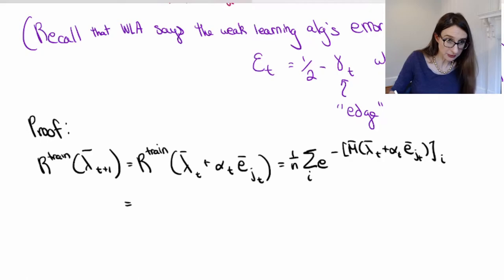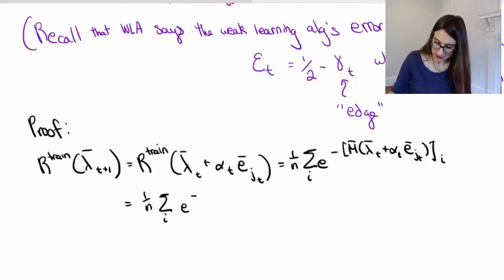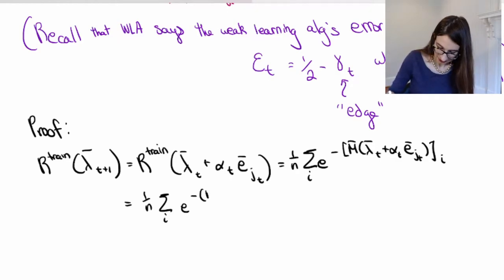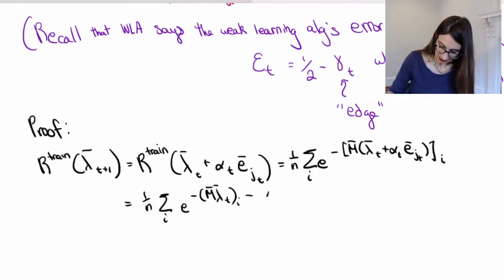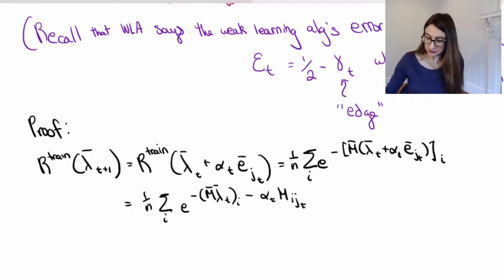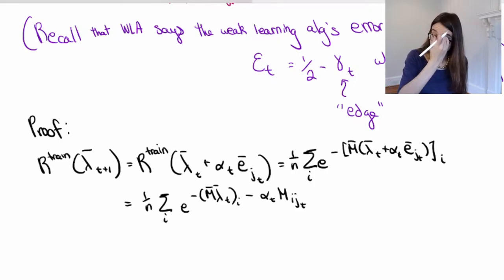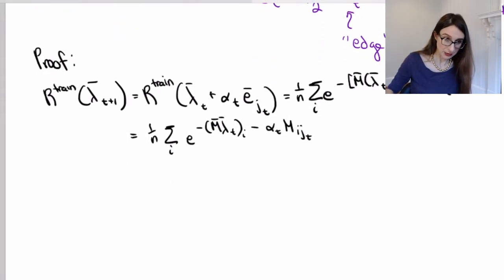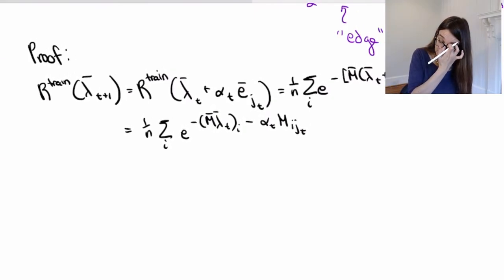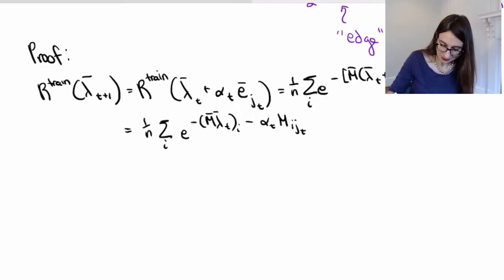I can rewrite this as (1/n) sum over i of e to the negative — and I'm going to pull that m through, write the term separately — so m_{lambda_t,i} minus alpha_t * m_{i,j_t}, because e_{j_t} means look at that j_t-th column of m, i means take that i-th component, so you just end up with m_{i,j_t}. Now I'm going to separate this into two sums: one for the points where m_{i,j_t} is 1, and the other for where m_{i,j_t} is minus 1 — separating the points that Adaboost got right versus wrong at that iteration.